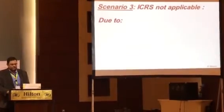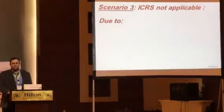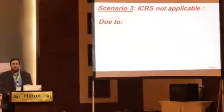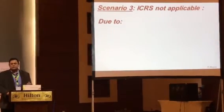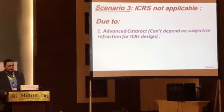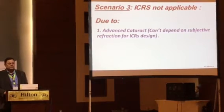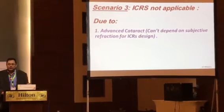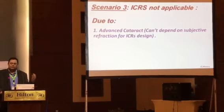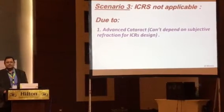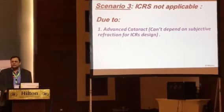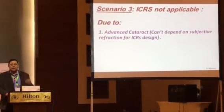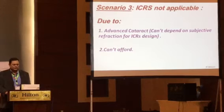Scenario three: if the patient cannot receive ICRs for one reason or another. The reason may be advanced cataract — the surgeon cannot predict which type of intracorneal segment to place. There is a specific nomogram for rings, and you have to know the visual axis, the corneal axis, the refractive axis, and combine all of these for good ICR results. But if the cataract is advanced and the cornea is irregular, you cannot place ICRs blindly. Or the patient may simply not be able to afford ICRs.